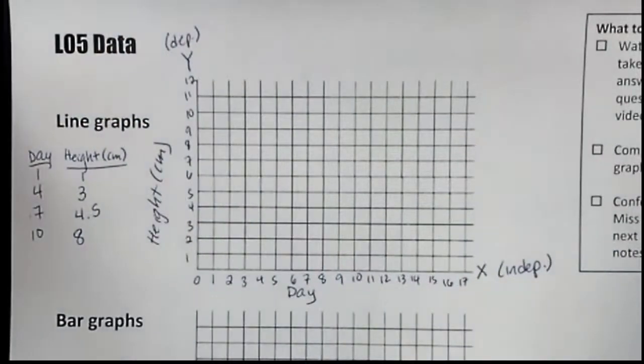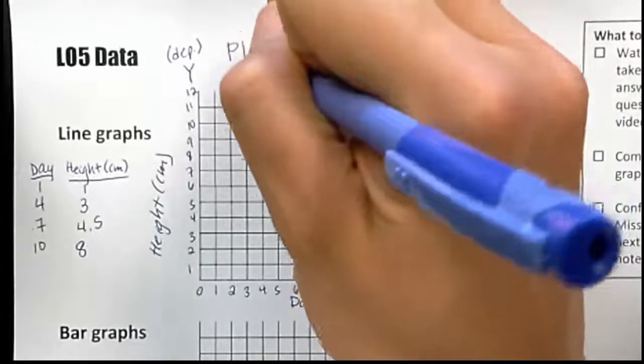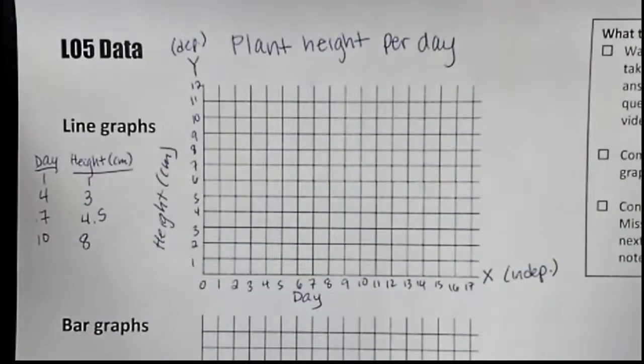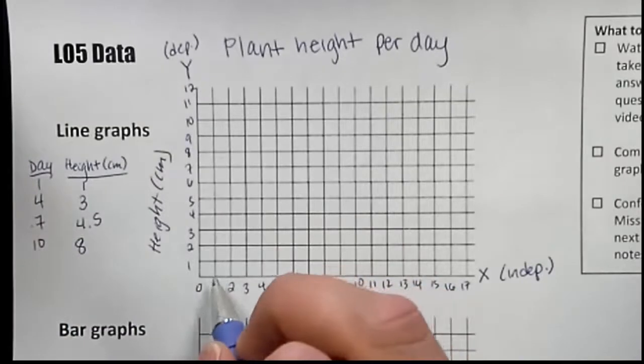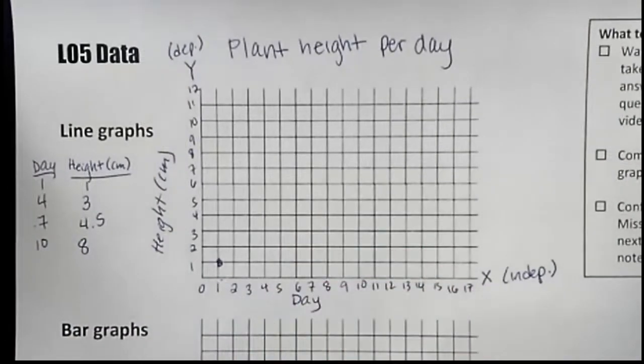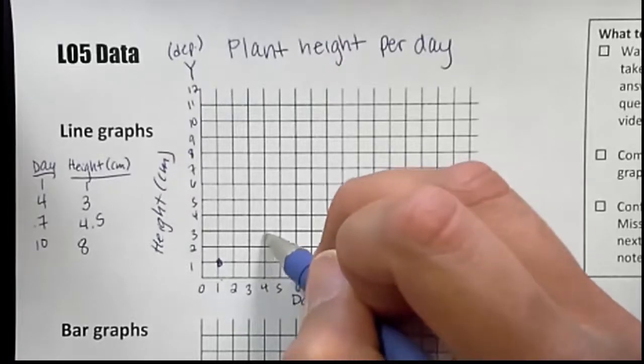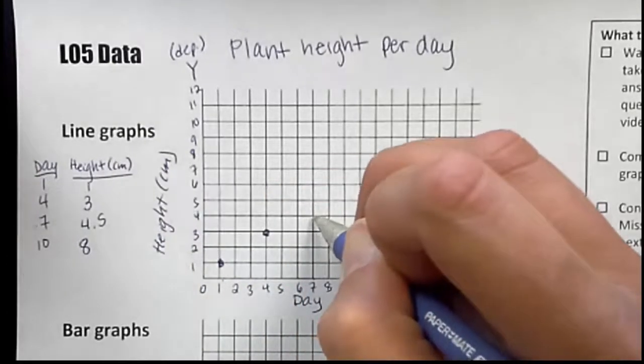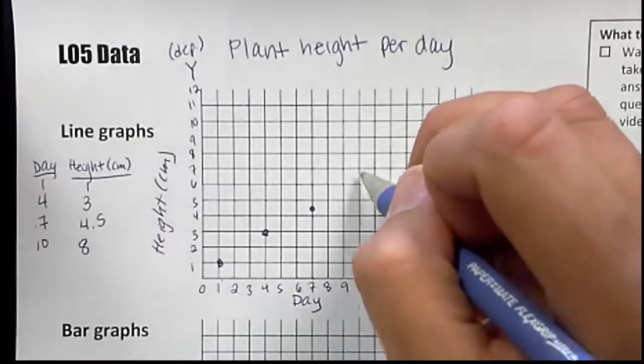One more thing that we need on this graph before we start putting our data in would be, what is this graph about? We need to give it a title. So this one, we could say plant height per day. It should be descriptive of what your graph is actually about. Now we're going to start plotting points. We always do the x-axis first and then the y. So on day 1, the plant was 1 centimeter tall. We're making a line graph, so we're going to put a dot there. On day 4, the plant was 3 centimeters. Day 7, it was 4 and a half. Now there's no 4 and a half on our scale, but halfway between 4 and 5 would be right there. And then on day 10, we'd go up to 8.